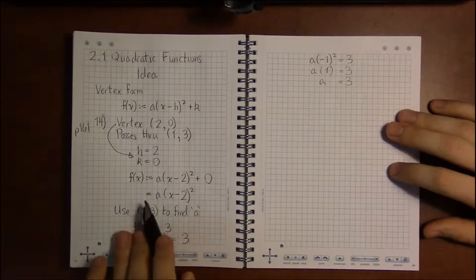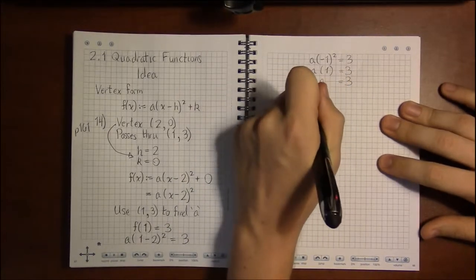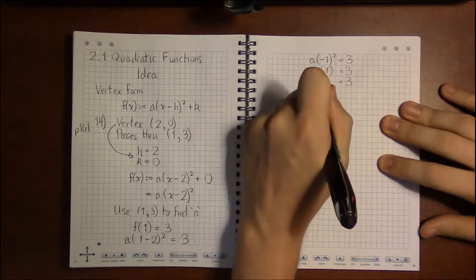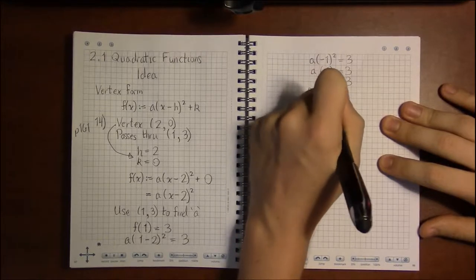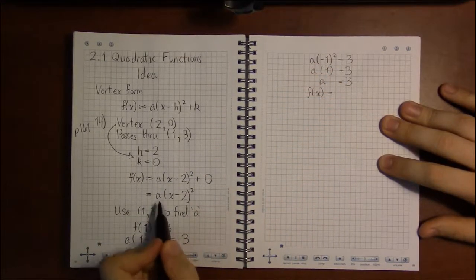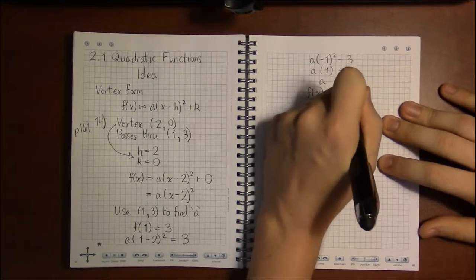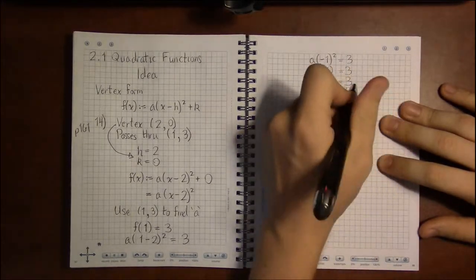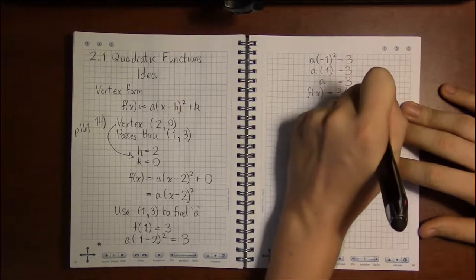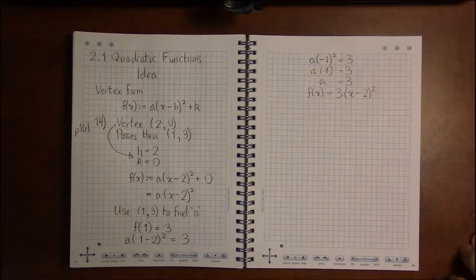We've also figured out from before that H is 2 and K is 0, so we now know all the pieces we need to name this particular quadratic. This quadratic is f(x) = 3(x - 2)².